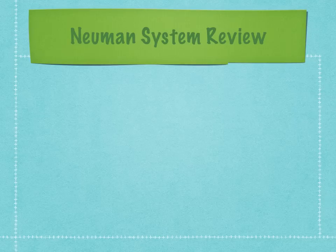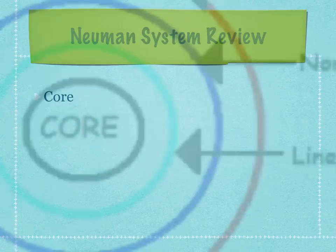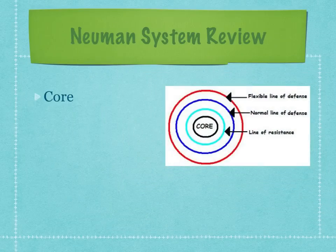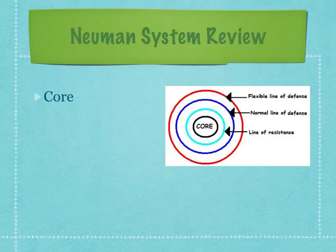Continuing with the Neuman Systems Model review, the first part is the core, also known as the central or core structure. This consists of our basic needs to survive as humans — for example, genetic structure, normal temperature, organ strength, ego structure, and response pattern.